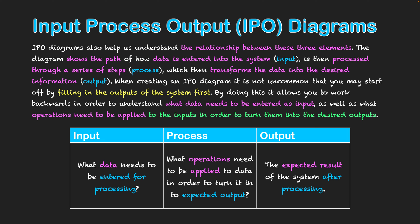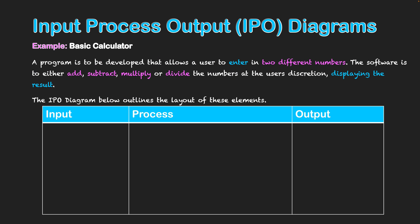Now we'll look at a quick example for a basic calculator. The program is going to allow a user to enter two different numbers; the software will add, subtract, multiply, or divide these numbers at the user's discretion, displaying the result. Using this IPO diagram, I'm going to start with the output first — the output is essentially the result of the calculation.